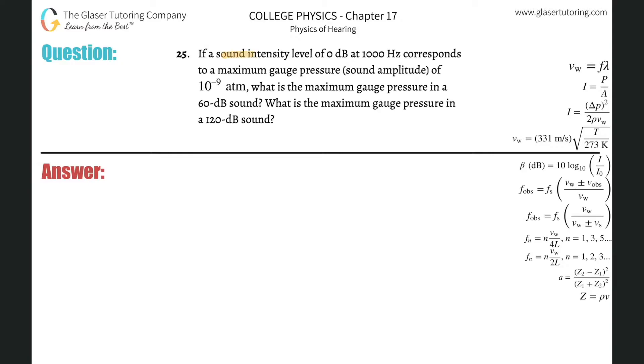Number 25: If a sound intensity level of zero decibels at 1000 Hertz corresponds to a maximum gauge pressure sound amplitude of 10 to the minus 9 atmospheres, what is the maximum gauge pressure in a 60 decibel sound?